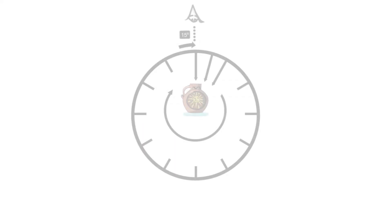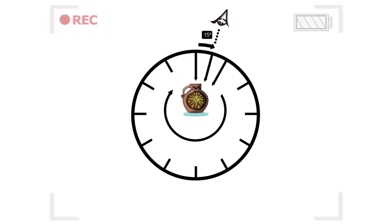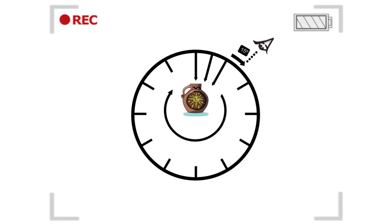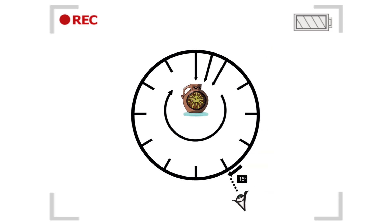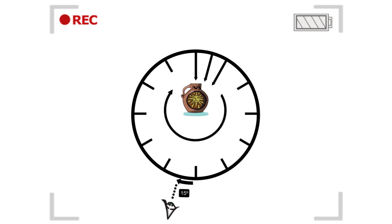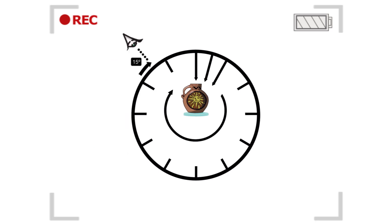The software creates the virtual space and the object by moving around the object taking images at set intervals. There needs to be at least a 60% overlap between the images for the software to understand that they go together. This translates to rotations of about 15 degrees, as shown here.